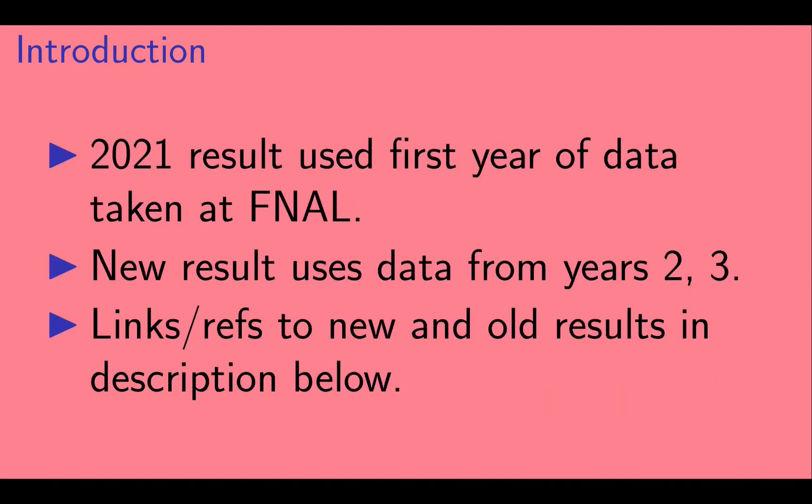The 2021 muon g-2 result used the first year of data taken at Fermilab. This new result uses data from years 2 and 3. You can find links and references to the old and new results in the description below.